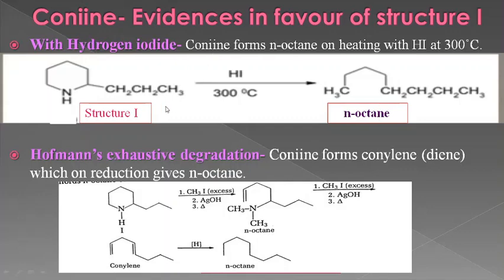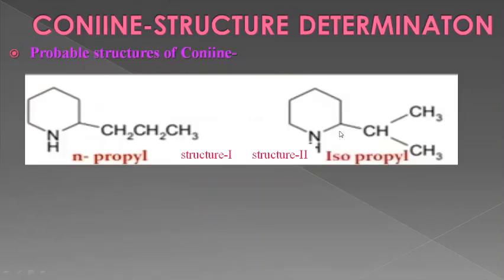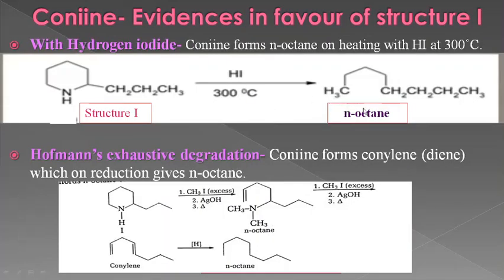The first evidence is the reaction with hydrogen iodide. Conine forms normal octane on heating with HI at 300 degrees centigrade. Considering Structure 1, treatment with HI at 300°C causes ring opening, converting it into normal octane. If we take Structure 2 with an isopropyl group, ring opening would give iso-octane. But experimentally, normal octane is obtained — this justifies Structure 1.